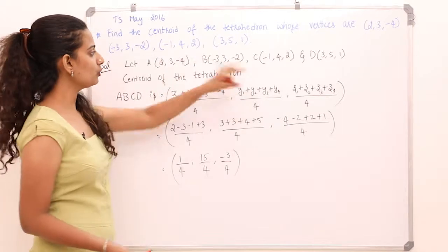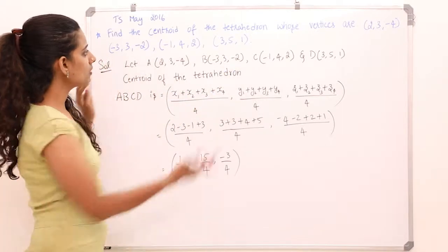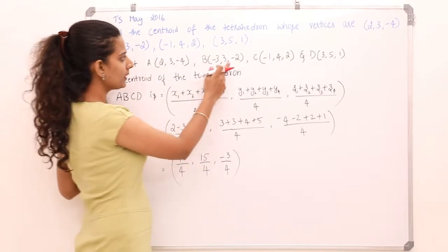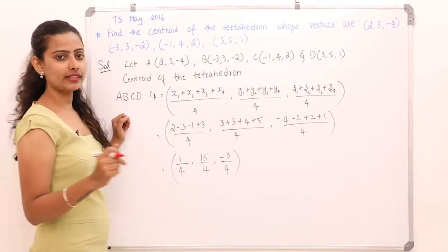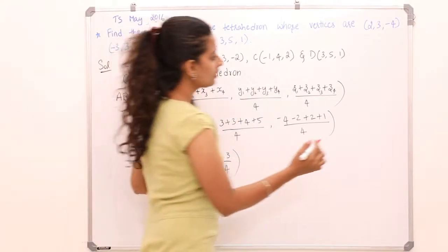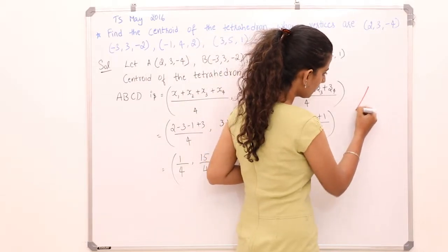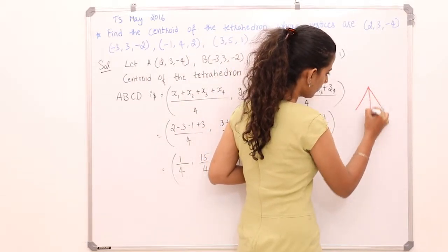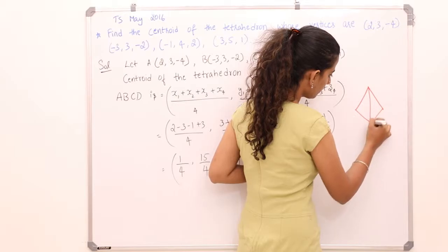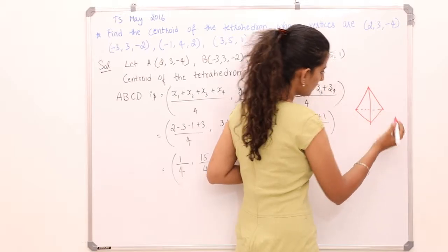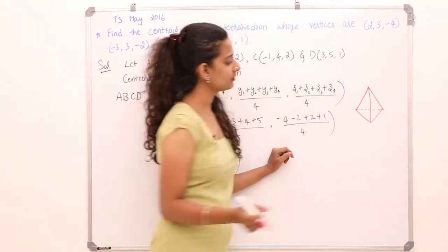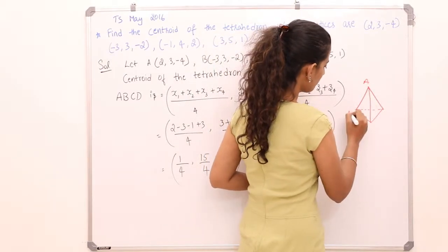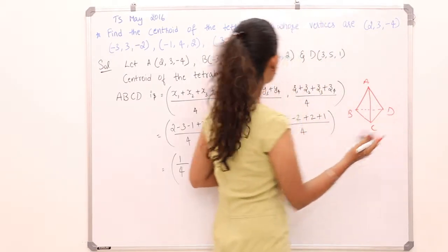Now, I have 4 points in the question. I am going to label them as A, B, C and D. There is a tetrahedron, so let A, B, C and D be the vertices.